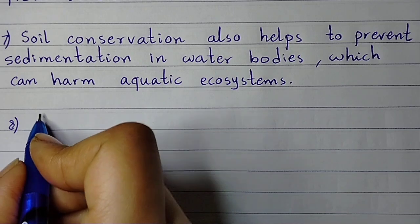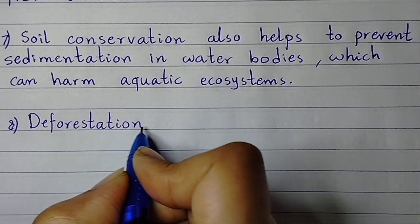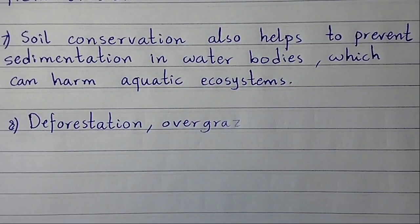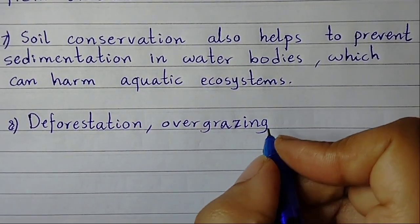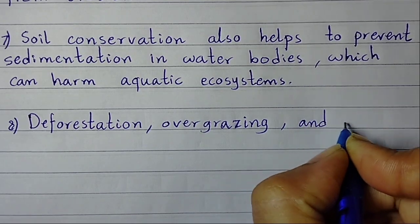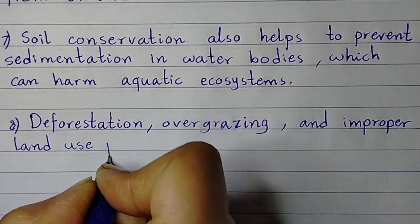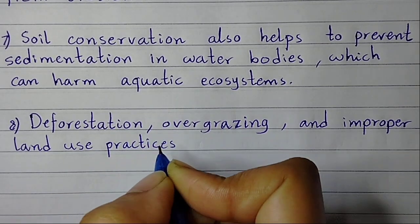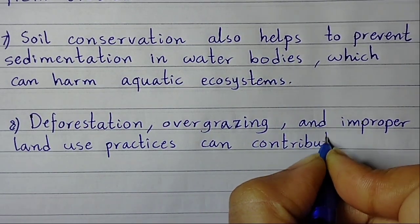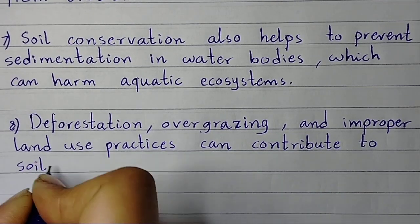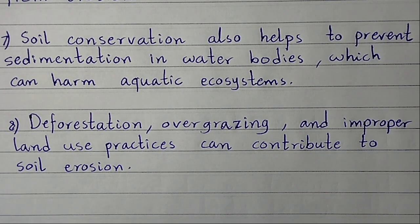Point number eight: deforestation, overgrazing, and improper land use practices can contribute to soil erosion.